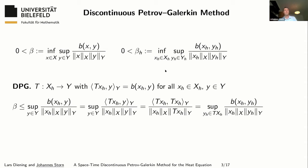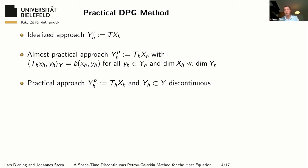Unfortunately, it's not that easy, because in general we cannot compute the operator T since it's a mapping in an infinite-dimensional space. Therefore, we have to approximate it, and so we replace this operator T by some operator T_H, which is defined similarly, but we have replaced the continuous space Y by some space Y_h, which should however be significantly larger than X_h in order to have a good approximation. This is in principle computable, but not very efficient, because in the end this leads to a saddle point problem of size dimension of X_h plus dimension of Y_h, which is very large.